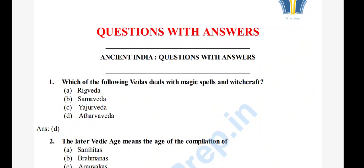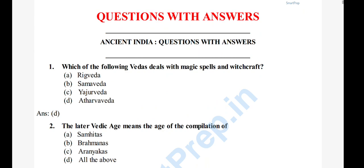Question 1: Which of the following Vedas deals with magic spells and witchcraft? Options: A) Rigveda, B) Samaveda, C) Yajurveda, D) Atharvaveda. The right answer is option D, Atharvaveda.